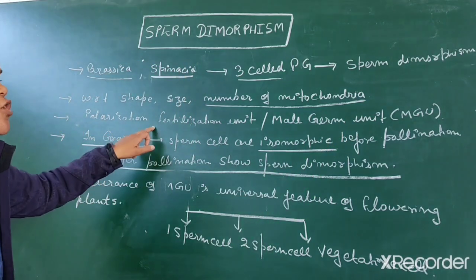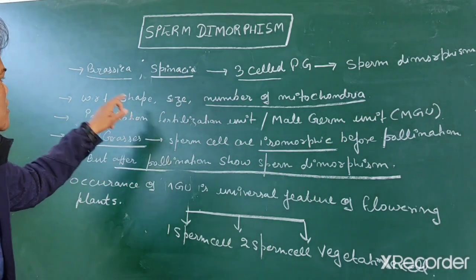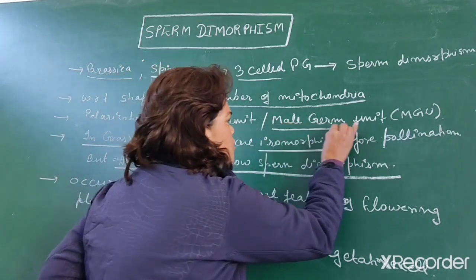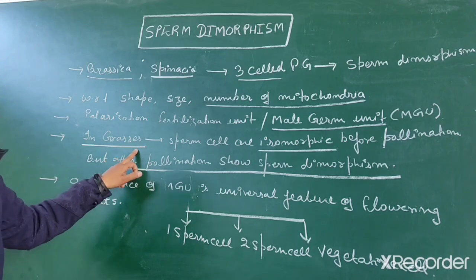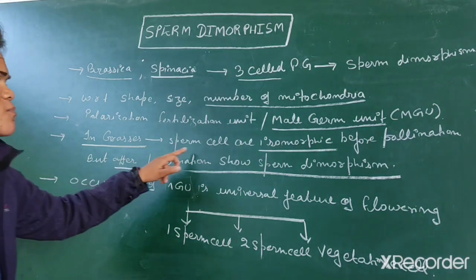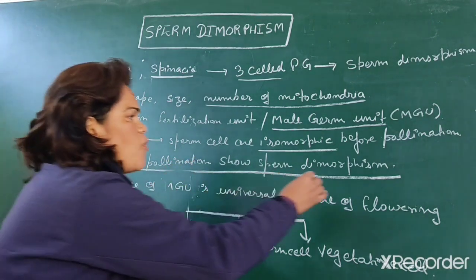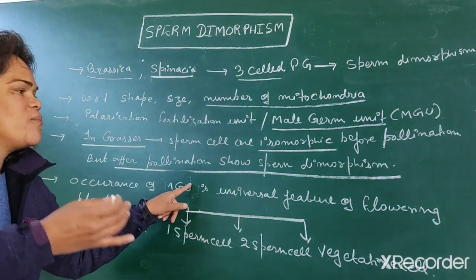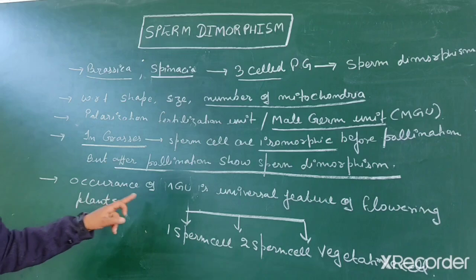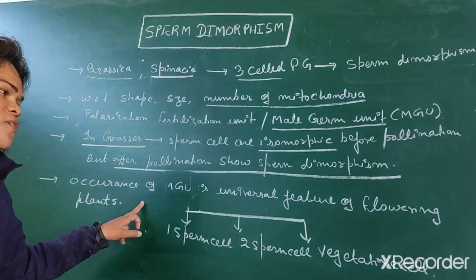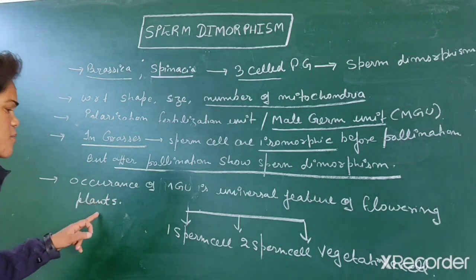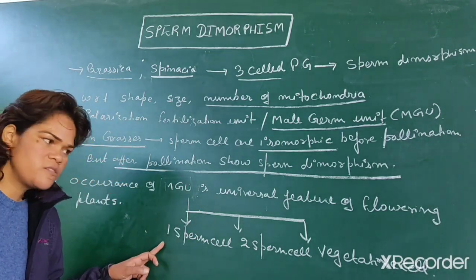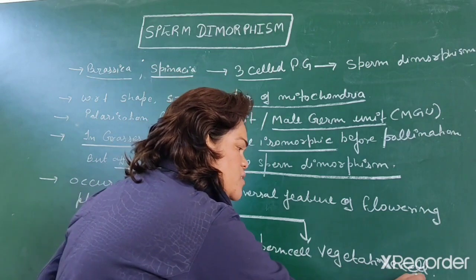The polarization-fertilization unit is present, meaning Brassica and Spinacea show the presence of a male germ unit. Particularly in grass cells, sperm cells are isomorphic before pollination but after pollination they show sperm dimorphism. The presence of a male germ unit is a universal characteristic feature of flowering plants, comprising two sperm cells and one vegetative cell.